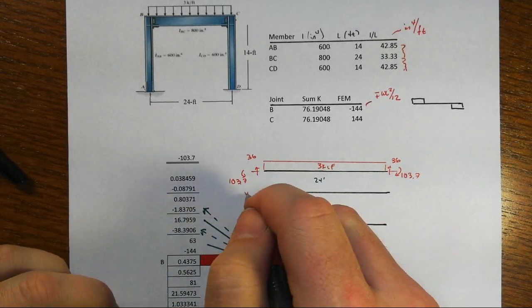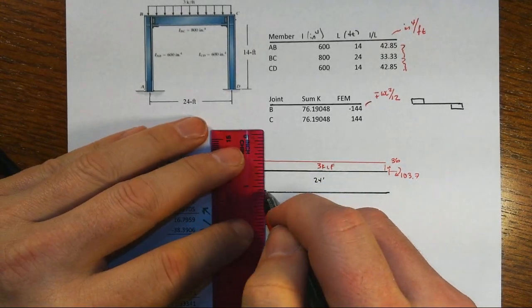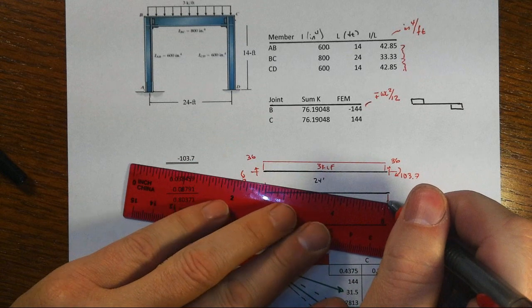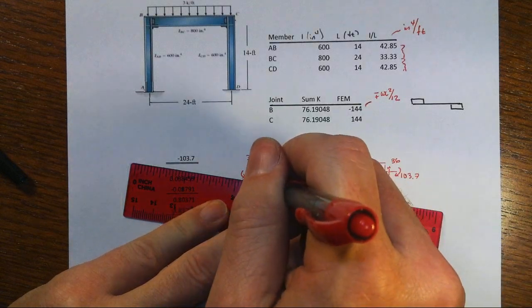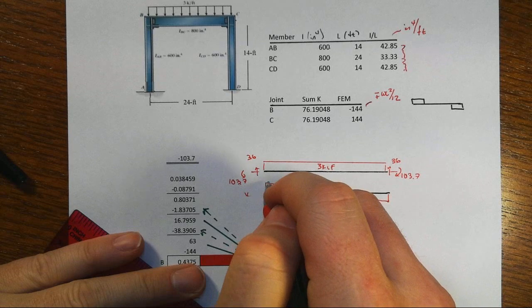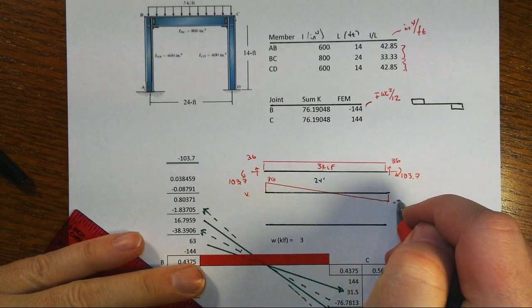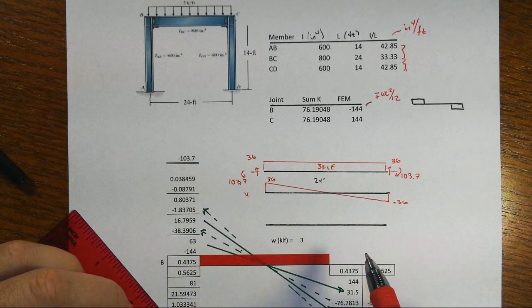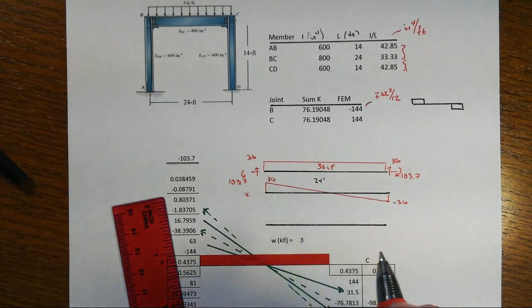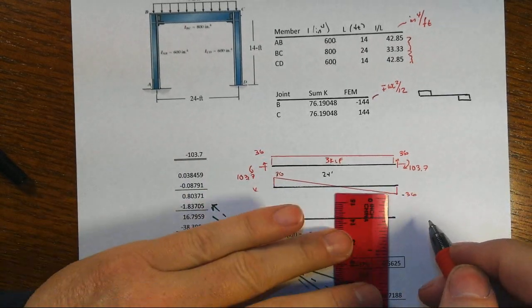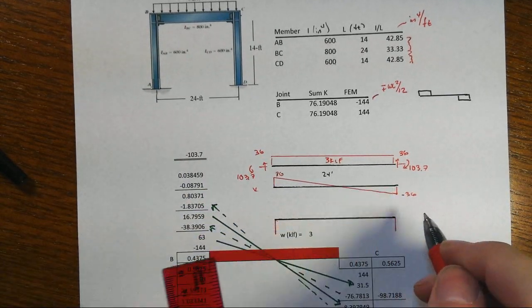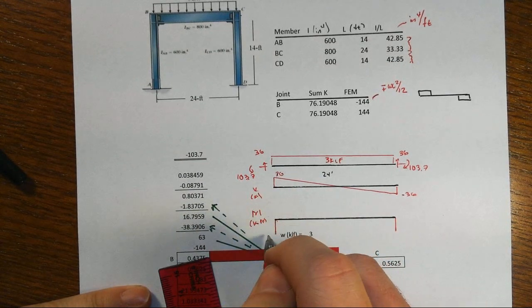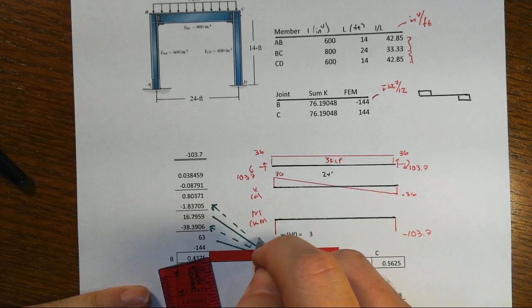So if this is the shear diagram, it's going to look just like we would expect it to look, just like a simply supported beam that is symmetrically set up with the loading, and that's effectively what we kind of have here. Still 36 there, minus 36 there. None of that has changed. It has a slope of negative three kips per foot.